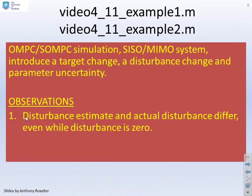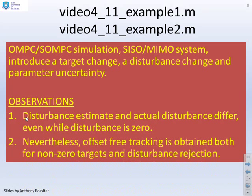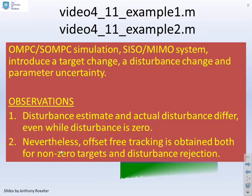So the key observations, the disturbance estimate and the actual disturbance may differ even while the disturbance is zero, and that could be to do with parameter uncertainty, but nevertheless you get offset free tracking for both non-zero targets and disturbance rejection, and that's the key thing.